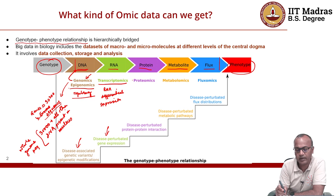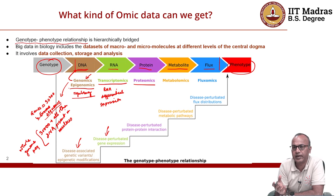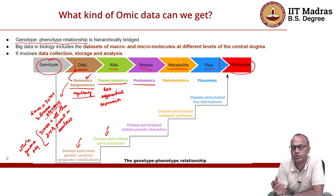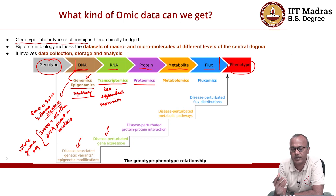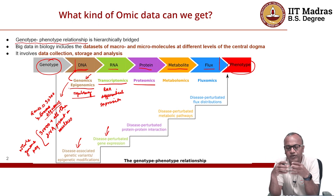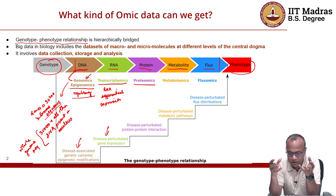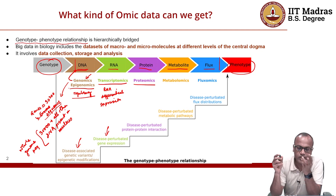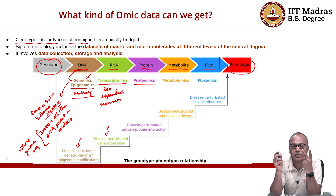The third level is proteomics, which is the big data encompassing all the proteins expressed in a cell. Similar to RNA transcriptomics, differential proteomics allows us to see differences at the protein level and how proteins interact. As we saw in the hemoglobin example, different domains can come together and interact; similarly, different proteins interact to bring about a particular function. If that interaction is perturbed in a disease, it can also be studied using proteomics. The three major datasets are genomics, transcriptomics, and proteomics.